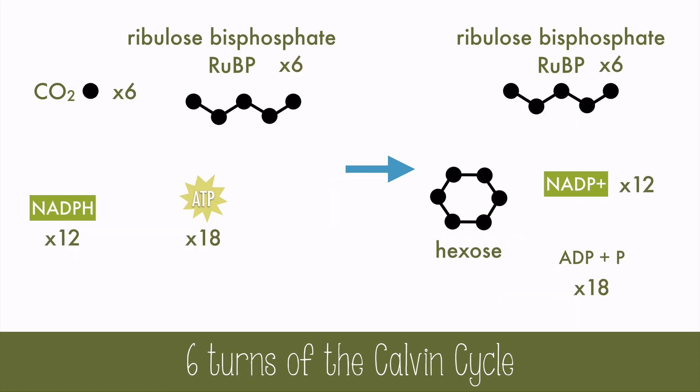So after six turns, one hexose molecule can be made, which uses six carbon dioxide molecules, 12 NADPH, 18 ATP, and 6 RuBP — and also regenerates the 6 RuBP. The spent ADP and NADP molecules can be recharged in the thylakoid discs by the light reaction.